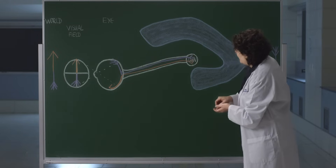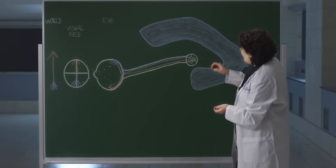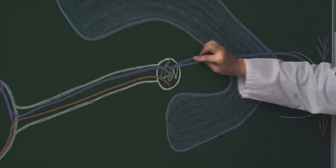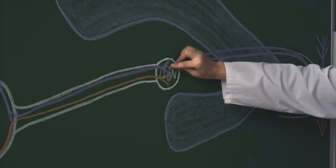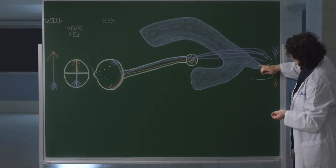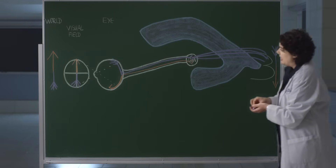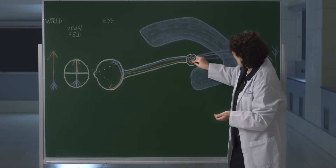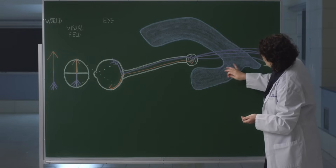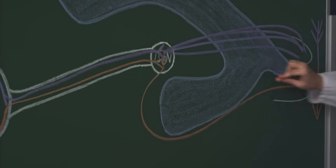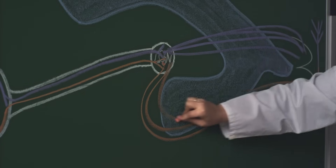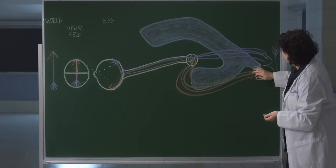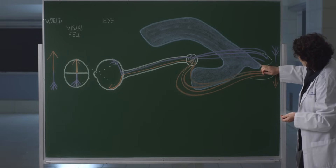From the lateral geniculate nucleus, the fibers are going to project to the primary visual cortex. The fibers from the upper part of the retina, containing information about the lower visual field, will travel directly to the primary visual cortex — and in fact these fibers project to the primary visual cortex that is superior to the calcarine fissure. Now, for the fibers from the lower part of the retina — which carry information from the upper visual field — their way to the cortex is blocked by the inferior horn of the lateral ventricle. They're going to have to swing around that inferior horn to reach the primary visual cortex, and these fibers project to the primary visual cortex that is inferior to the calcarine sulcus.